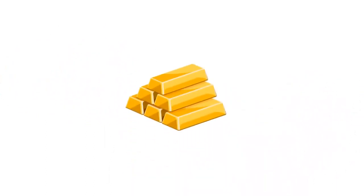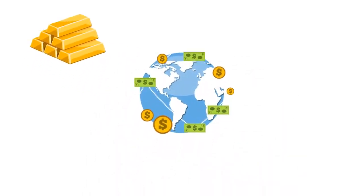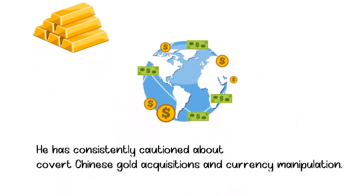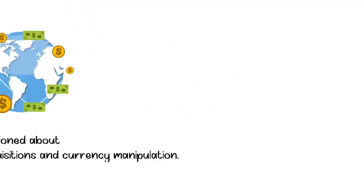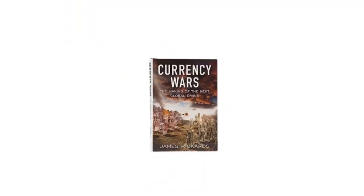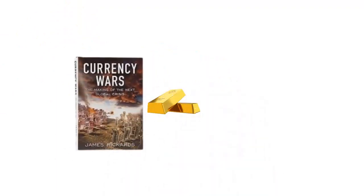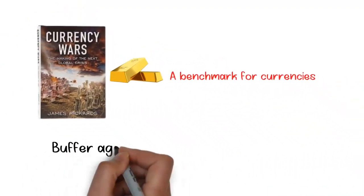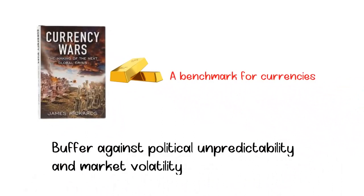Gold has been a consistent topic of discussion for Jim Rickards, who emphasizes its value and use as a weapon in the economic landscape. He is consistently cautioned about covert Chinese gold acquisitions and currency manipulation. In his 2011 book, Currency Warfare, Rickards outlines why gold remains essential as a store of wealth, a benchmark for currencies, and a buffer against political unpredictability and market volatility.